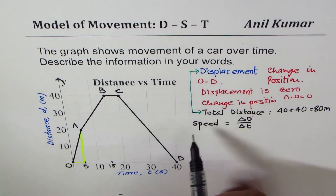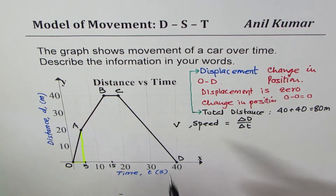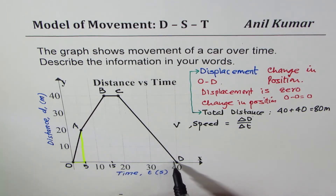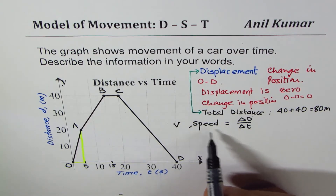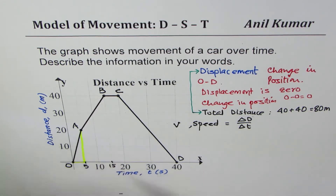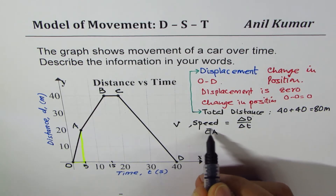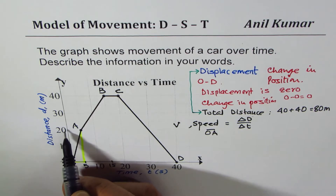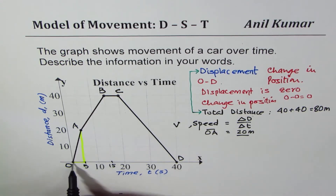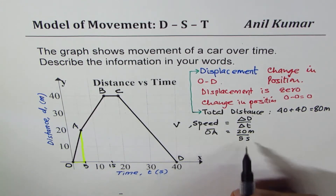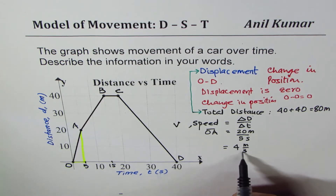When we use displacement we also use the term velocity, indicated by V. For this video we will stick to speed and distance. From O to A, the speed is: change in distance is 0 to 20 = 20 meters, divided by time 0 to 5 = 5 seconds. So speed is 20 divided by 5 which is 4 meters per second.